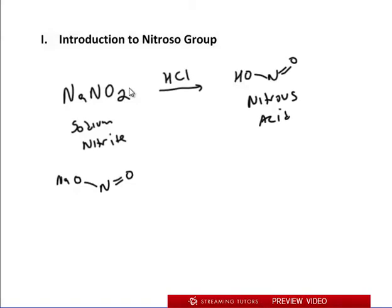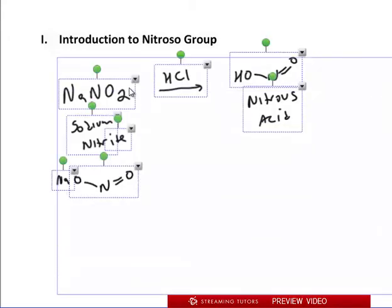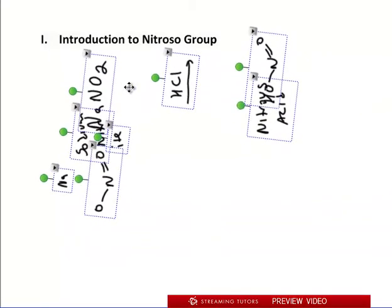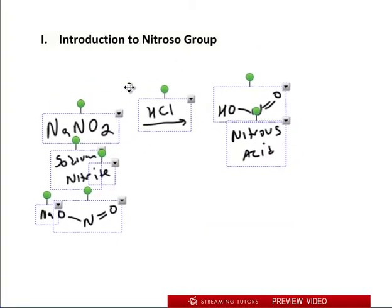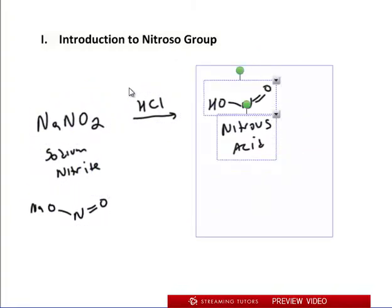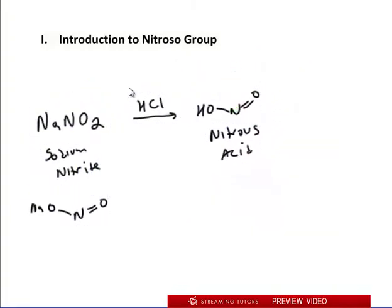This is nitrous acid. You'll see why I'm writing this out carefully because remember HNO3? So now we have HNO2, we have HNO3, so it kind of gets confusing if you're not careful about recognizing this. From nitrous acid, we can add another HCl.